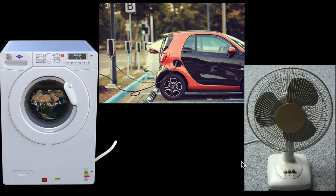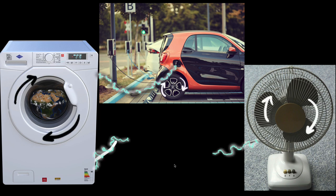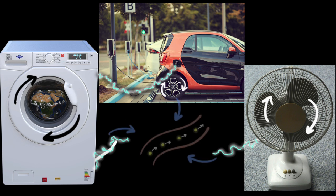What is common in washing machines, fans, and electric cars? They all use electricity to push on things and make them move. But electricity is just moving electrons, and these electrons are so, so tiny. How can these super light microscopic electrons push on such huge things?